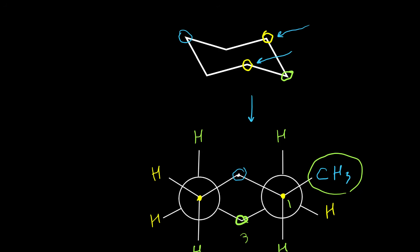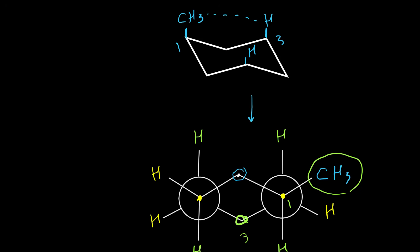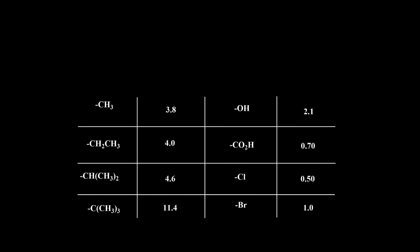Because of that, it's called 1,3-diaxial interaction, and we can show it on the chair conformer as well. When we have a CH3 or any other group on axial position, there are interactions between the carbon number three C-H bond and our group — that's why it's called 1,3-diaxial interaction. The value for this interaction depends on the size and steric effect of each group, and there is a table for the value of 1,3-diaxial interaction for each group. The values in this table are for a single interaction with hydrogen, like 3.8 kJ for the methyl group with one hydrogen on the axial position. Normally we have two of them, so this number should be multiplied by two.